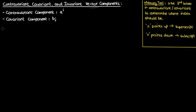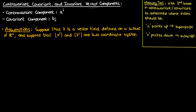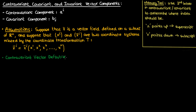Now in order to provide mathematical definitions for contravariant and covariant, I'm going to first set things up by making a few assumptions. Say that I've got a vector defined on a subset of Rn with two coordinate systems xi and xi bar related to each other using the coordinate transformation t. Let's now define contravariant vectors.